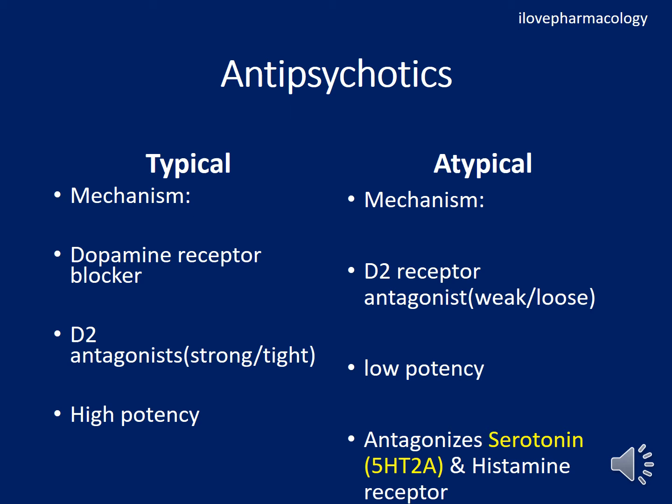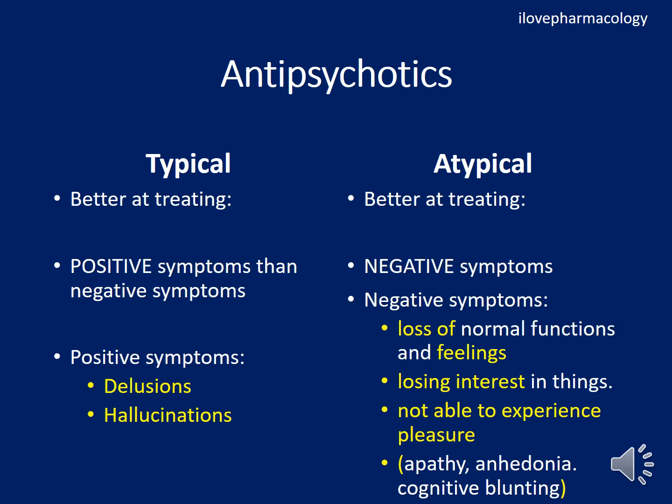Atypical antipsychotics have low potency towards D2 receptors. In addition to weak D2 antagonism, they also antagonize the serotonin 5-HT2A receptor and histamine receptors.